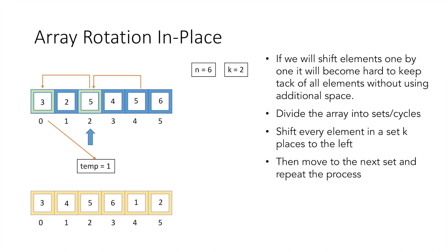We jump to index 4, the index of the element we shifted. The element at index 0 should come at index 4, but we already changed index 0 — however we stored its value in temp. Using temp, we place value 1 at index 4. Now if we jump to the index of the element shifted, we go back to index 0, where we already have the correct element. This marks the end of our first set or cycle formed by indices 0, 2, and 4.